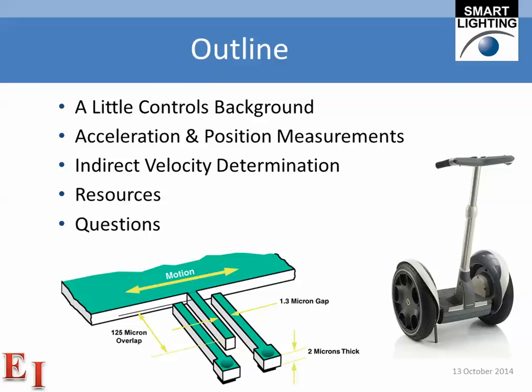I provided two pictures on this slide. One shows a Segway, which is a really good example of a system in which controls are essential for its operation. The other is a configuration showing how the accelerometers work that we're going to be using in this experiment. What we have is a cantilever beam where motion goes left and right, and the finger in the center moves back and forth, changing the capacitance of the gaps. That change of capacitance is used to figure out the acceleration. This is an example of a MEMS device where very small physical structures are made using technology developed for integrated circuits.